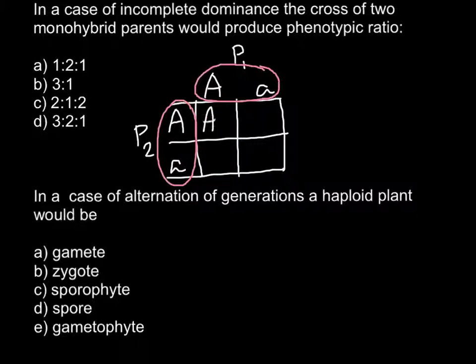so capital A capital A here, capital A small a here, and capital A small a here, and small a small a here. And as long as this dominant allele capital A is incompletely dominant over the recessive allele small a that stands for the white color,